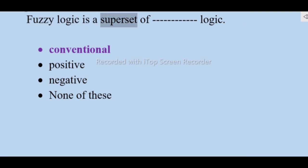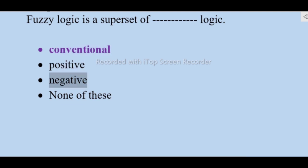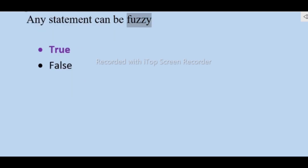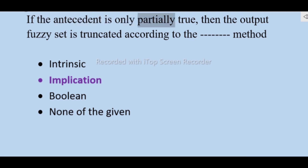Fuzzy logic is a superset of conventional logic — not positive, negative, none of these. It was Aristotle who came up with the law of the excluded middle — true or false. Any statement can be fuzzy — true or false — false.